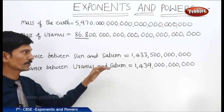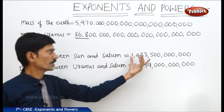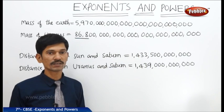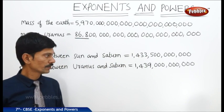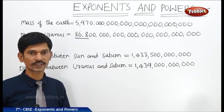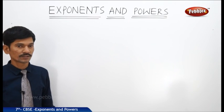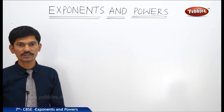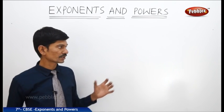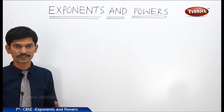So how do we overcome this problem? To overcome this problem — to read and understand larger numbers easily — we use the concept of exponents. The larger numbers are written in a shorter form using the concept of exponents.